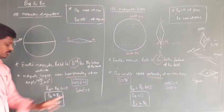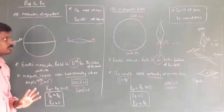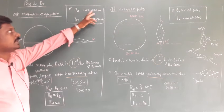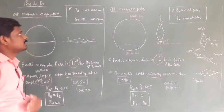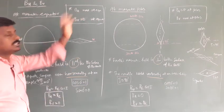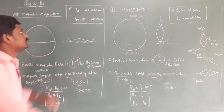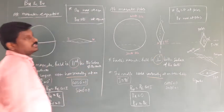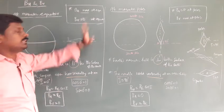Since sin 0 equals 0, BV is equal to 0. So the final result: BH is maximum at the equator — the horizontal component of Earth's magnetic field is maximum at the equator. The vertical component is 0 at the equator.